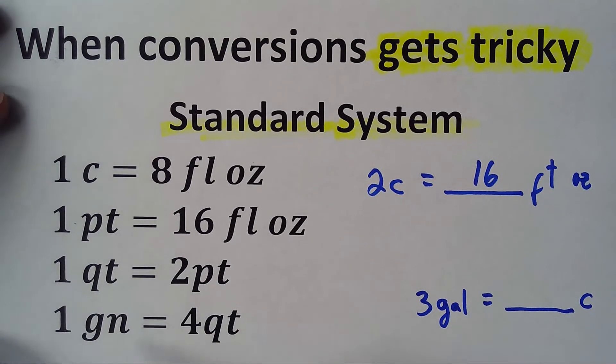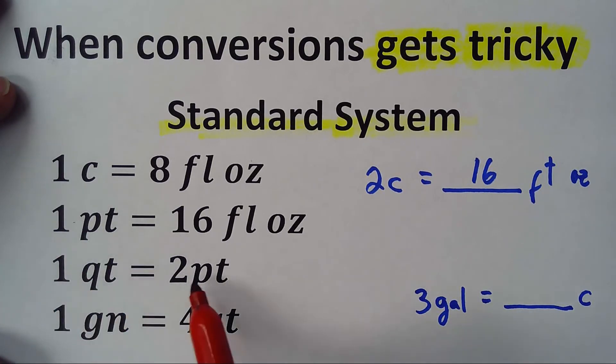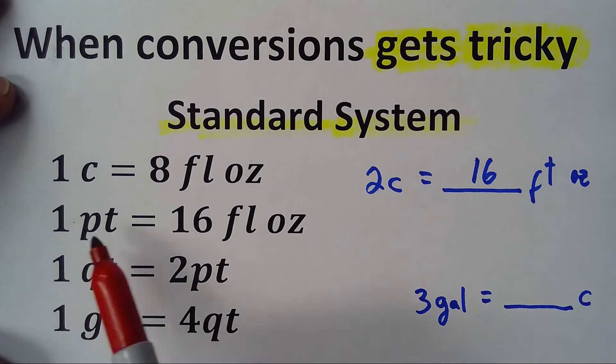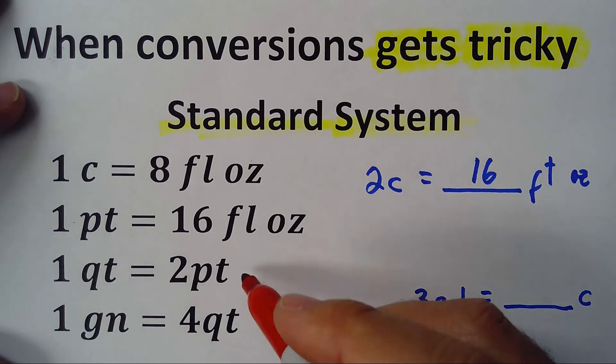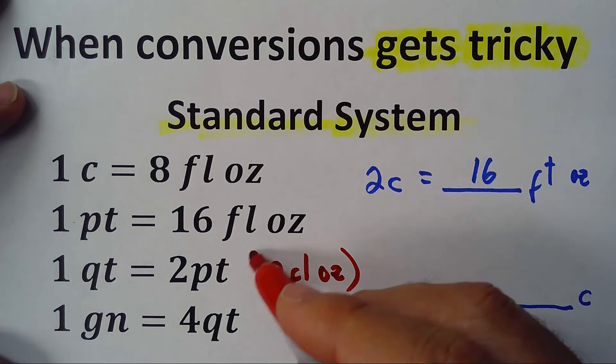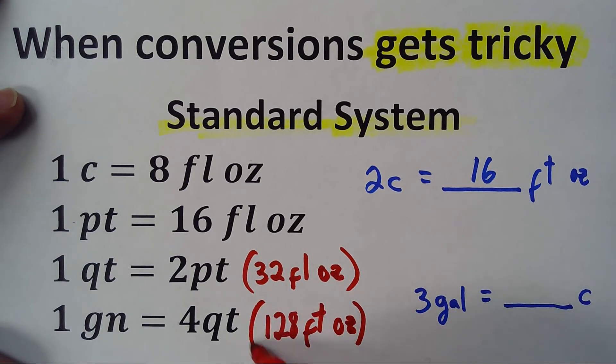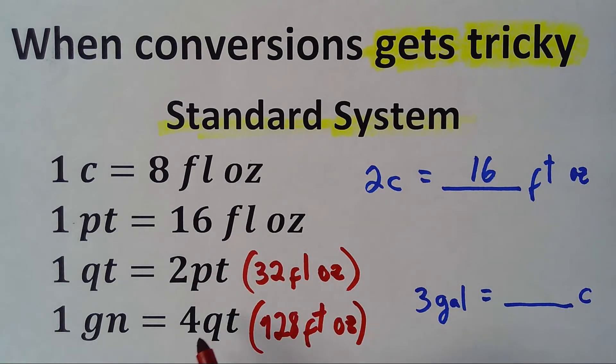We're going to do some proportions here to find this. I have here quart related to pint, and pint is 16 fluid ounces. So if a quart is two pints, that means a quart will be 32 fluid ounces. Now I know that one gallon is four quarts. If one quart is 32, four quarts would be 32 times 4, which is 128 fluid ounces.